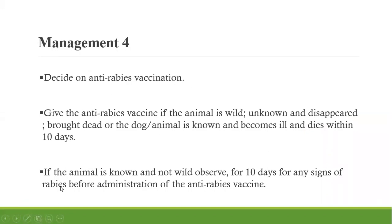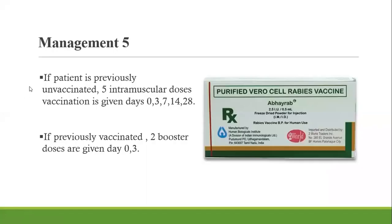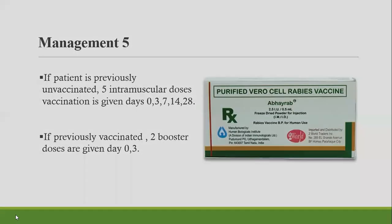After wound care, administer the anti-rabies vaccine. We normally follow a five-dose schedule given intramuscularly on days 0, 3, 7, 14, and 28 — so within one month. This is for a person who has never been vaccinated against rabies. However, if the person has previously been vaccinated, they only require two booster shots at day 0 and day 3.